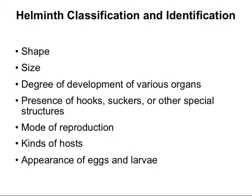When we consider classification and identification of helminths, we look at shape, size, degree of development of various organs, the presence of hooks or suckers or other special structures for attachment, how they reproduce, what kinds of hosts they infect, and the appearance of the eggs and larvae. The microscope is the predominant means of identifying and classifying any of the helminths we'll consider this semester.